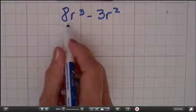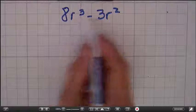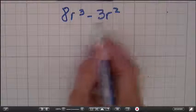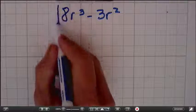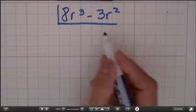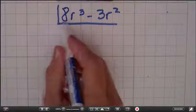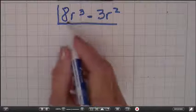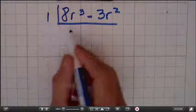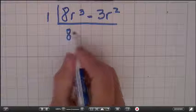What we're doing is we're looking for what does 8r cubed and 3r squared have in common. And just like when you took out the greatest common factor, you can do exactly the same thing. First we look at 8 and negative 3. The only thing they have in common is a 1. That's the only factor they have in common.